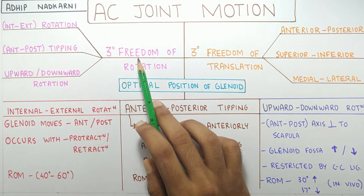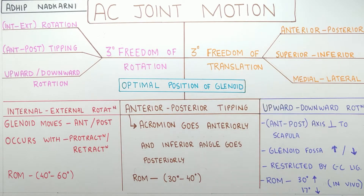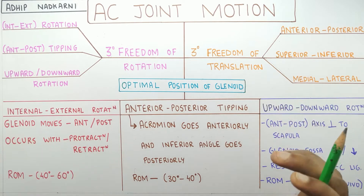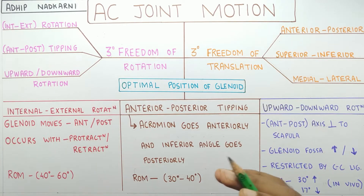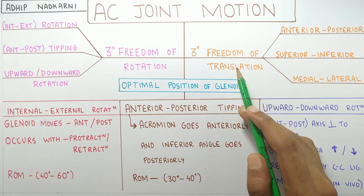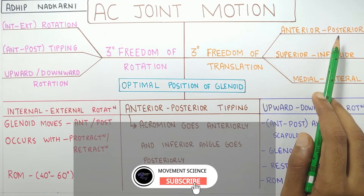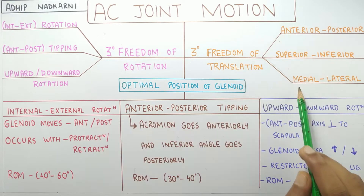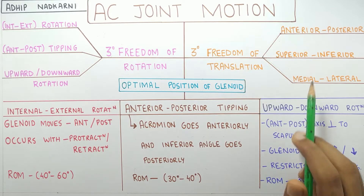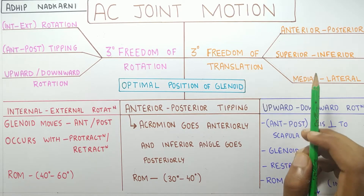There are three degrees of freedom of rotation and three degrees of freedom of translation at the AC joint. If you don't know the difference between rotation and translation, you can check out my video on axes and planes where I talk about this in detail. Let's start with translation first because it's quick and easy. There is anteroposterior translation, superior-inferior translation, and medial-lateral translation.